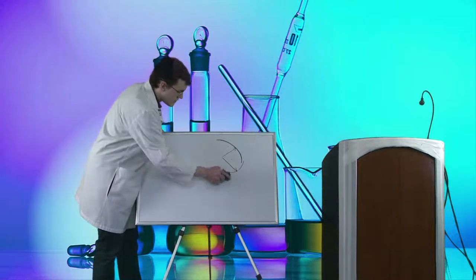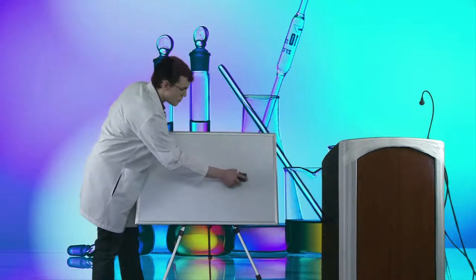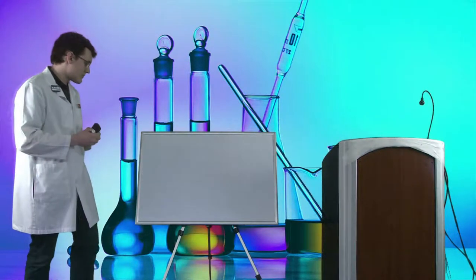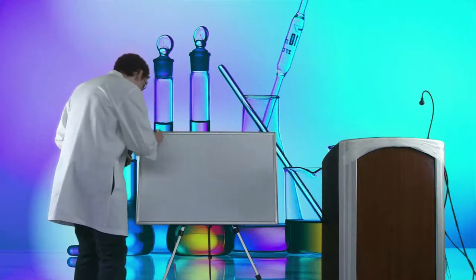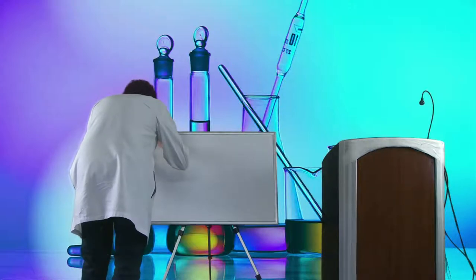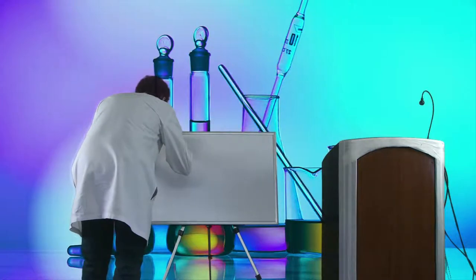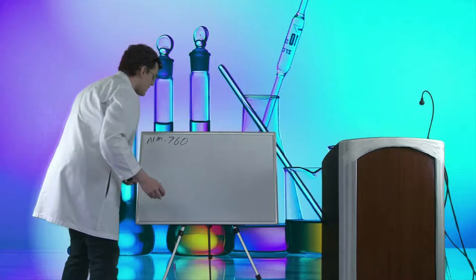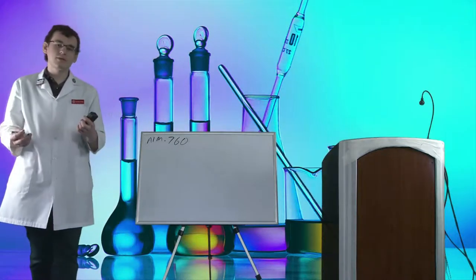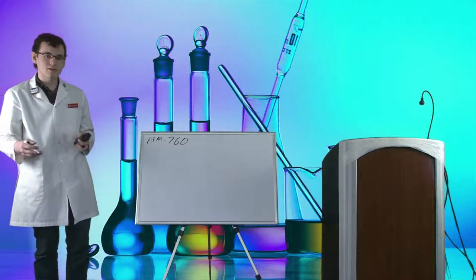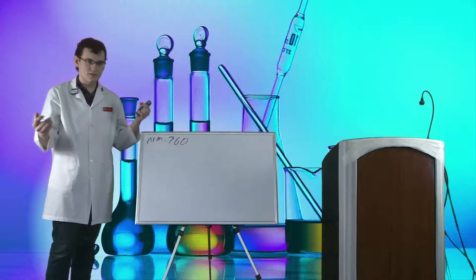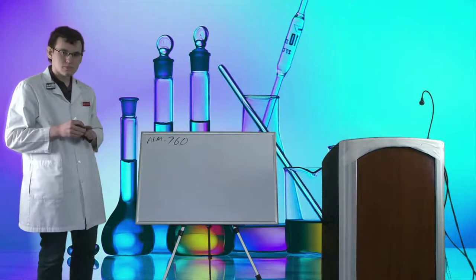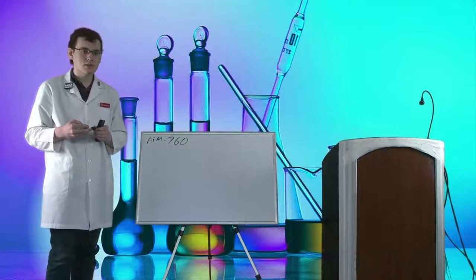I'm going to introduce you to a unit: Torr — T-O-R-R — a unit of pressure. Atmospheric pressure is 760 Torr. That varies a little depending on where you are, how close you are to sea level, and what the barometric pressure is that day, but 760 Torr is generally what atmospheric pressure is.